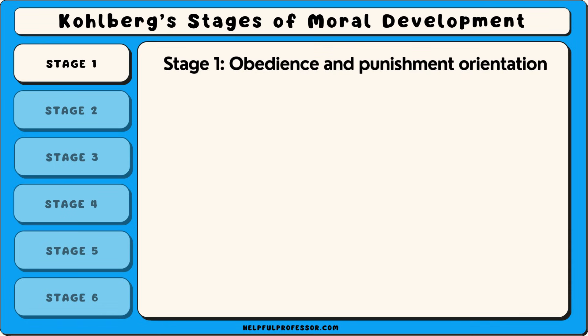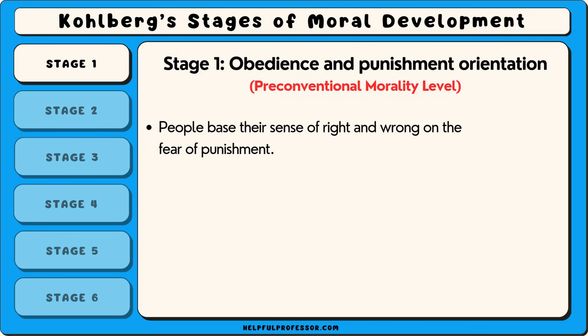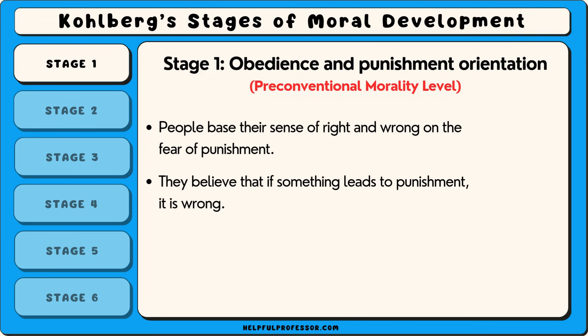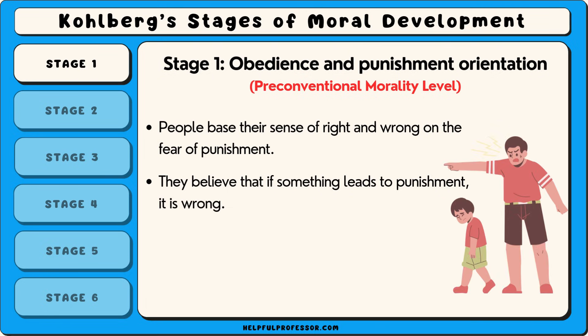The first stage is called obedience and punishment orientation, and it falls under the pre-conventional level. In this stage, people base their sense of right and wrong on the fear of punishment. They believe that if something leads to punishment it is wrong. For example, a young child might think that hitting a sibling is wrong only because it will result in being scolded or punished by a parent.